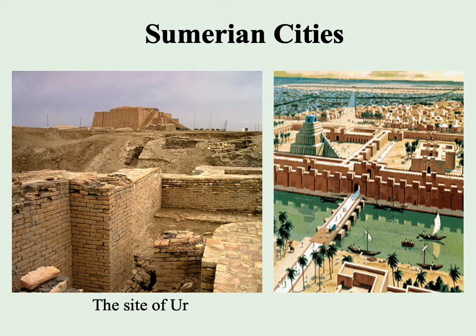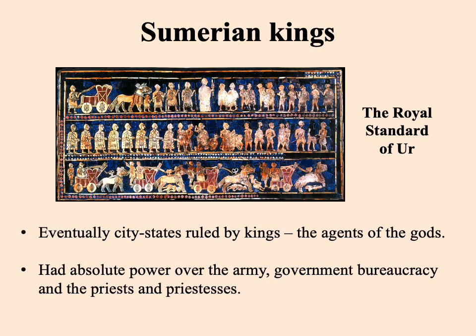Sumerian cities were ruled by kings who were seen not as divine themselves, but as representing the will of the gods on earth. Each king was the agent of the patron god of that city and had absolute power over the army, government, bureaucracy, priests, and priestesses. A Royal Standard of Ur nicely illustrates the hierarchy that existed, where everything centers around the king — day-to-day governmental activity, religious activity, and war. It seems the kings may have also constituted priests at the very beginning, but at some point there was a division of labor between priests and kings.